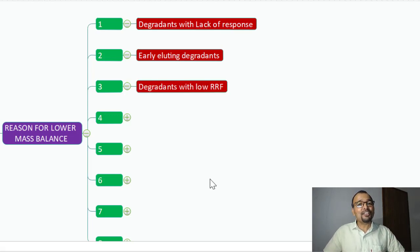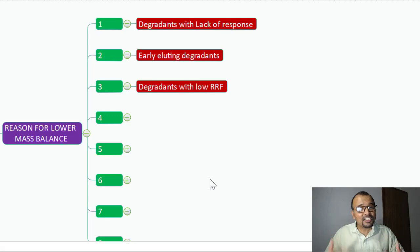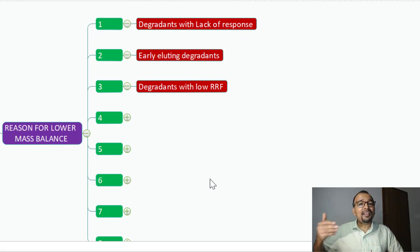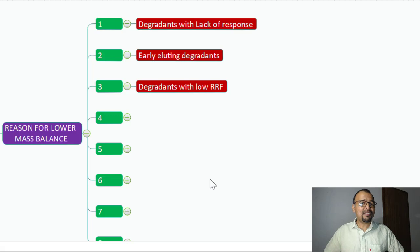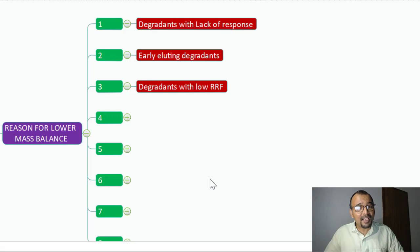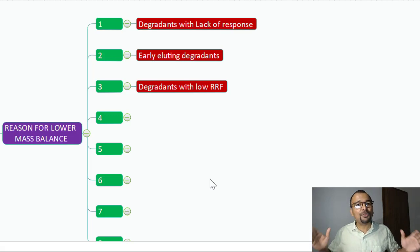Degradants with low relative response factor. You have a degradant which is well separated, but the problem is they have a lower response compared to the API. Because of this lower response, you will end up establishing them at the lower side. In reality, the impurity content may be 15%, but as it has only half the response compared to the API, you will report only 7.5% and lose 7.5% of the potential mass.